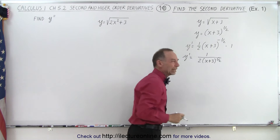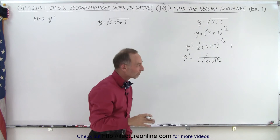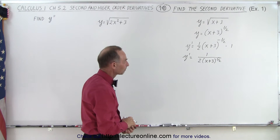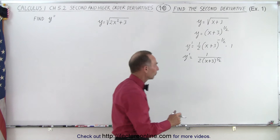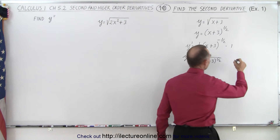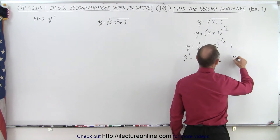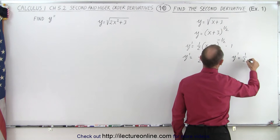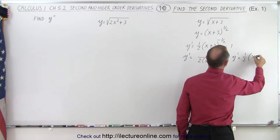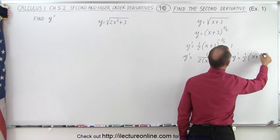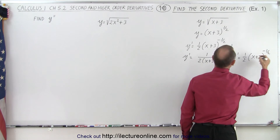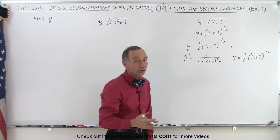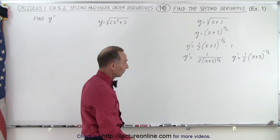It's always a good idea to write it with positive exponents and bring it to the denominator. Or we could have left it as y prime equals 1 half times the quantity x plus 3 to the minus 1 half. Either way, we should get the same result when we find the derivative.